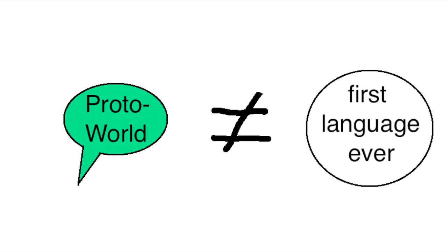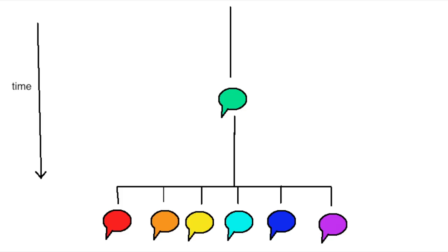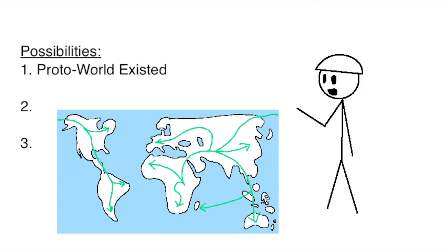This doesn't necessarily mean that Proto-World was the first language. Maybe the most recent common ancestor of all modern languages existed at the same time as a bunch of other languages, but now all those other languages are extinct. Or maybe it was the first language ever, but either way, possibility one is that Proto-World was a thing that existed.